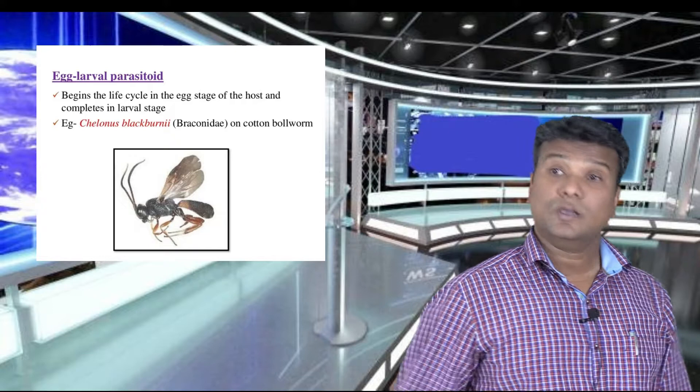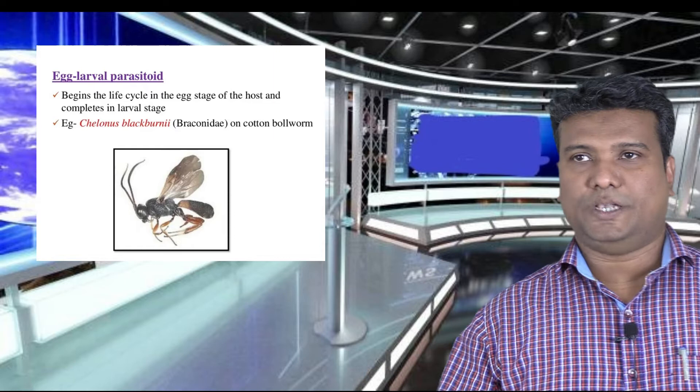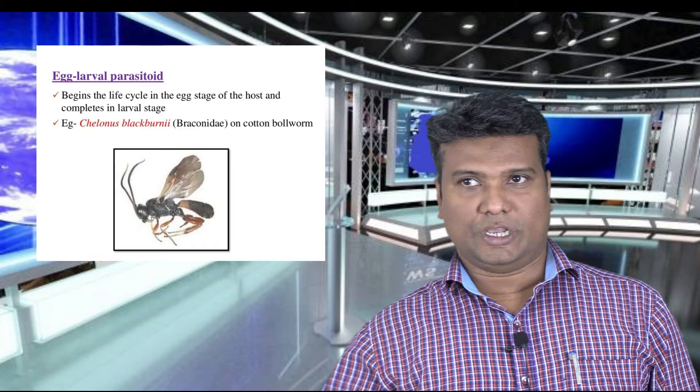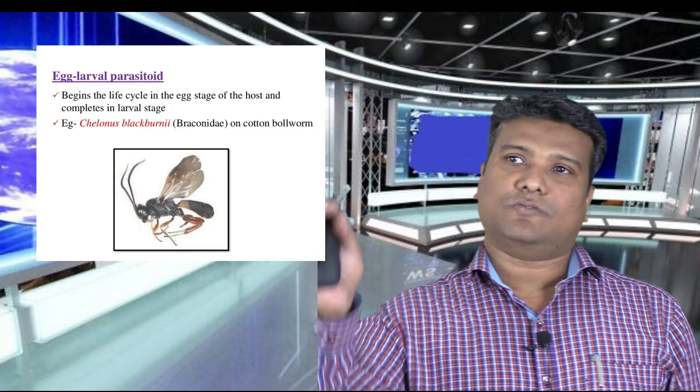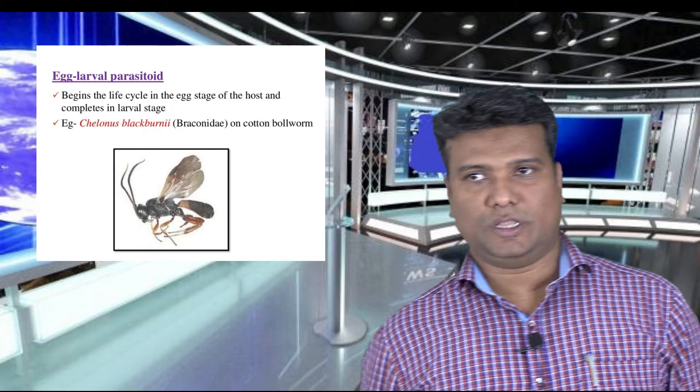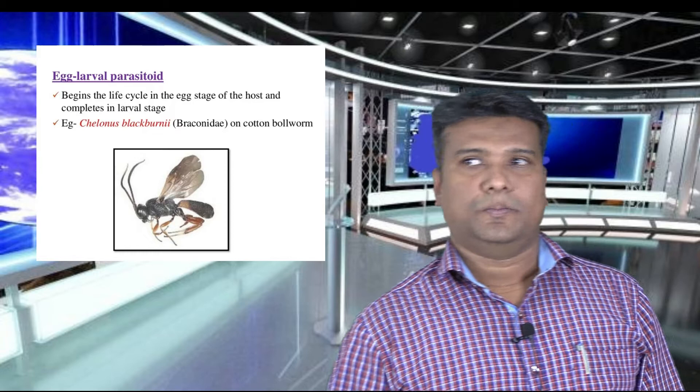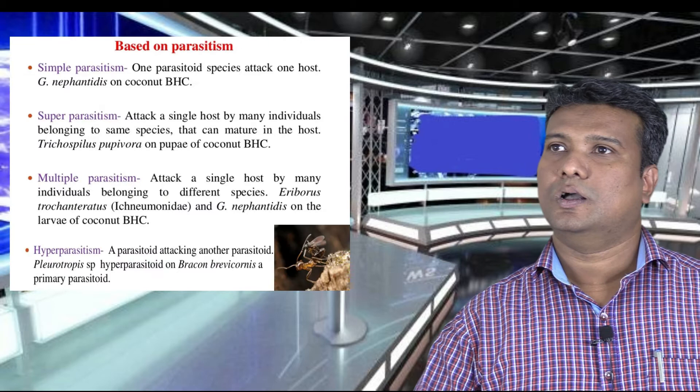The next type is a very efficient parasitoid that can be utilized in biocontrol of pests — that is the egg-larval parasitoid. These are capable of parasitizing both the egg and the larva of the pest, utilizing both resources. The specific example is Chelonus blackburni, which is a braconid that affects the cotton bollworm.